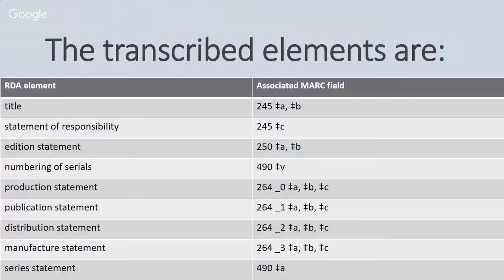There are other fields besides the title field that you transcribe. If there is a typo in the title or in the series, we enter it as we see it, and then we provide that additional access point or a note with the correct spelling. Under AACR2, we would provide the correct spelling in the title and then have a note on how we actually found it on the item. So we're doing the same thing just in a different order — we're not here to correct things, we are here to describe them as we find them under RDA.